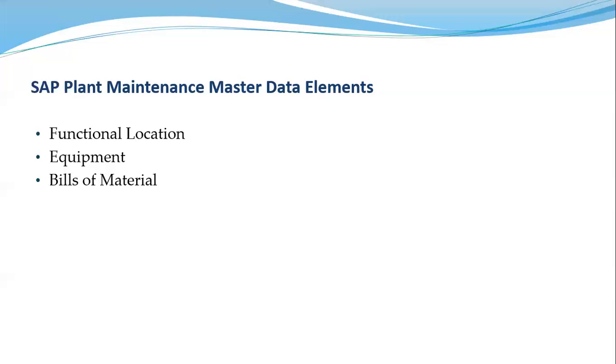We have three categories of BOM in SAP. These are material BOM, equipment BOM, and functional location BOM.